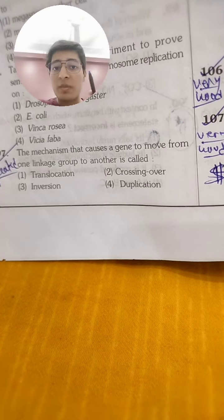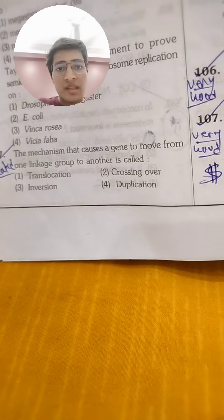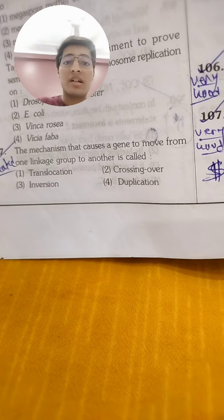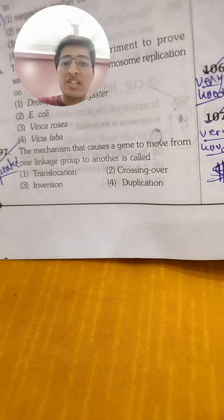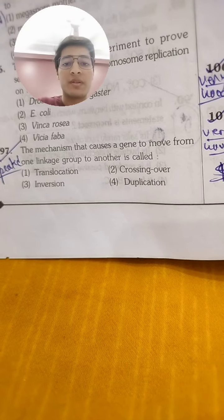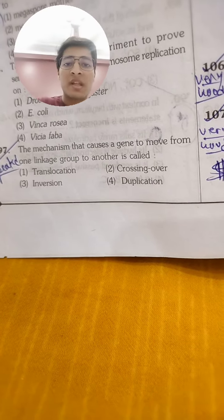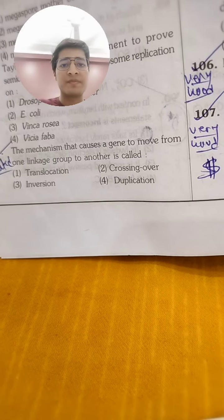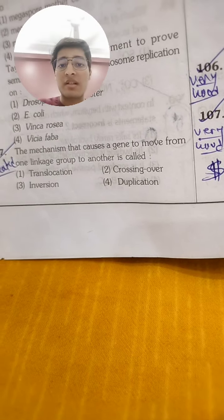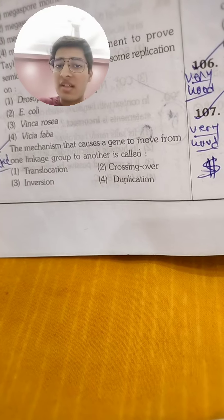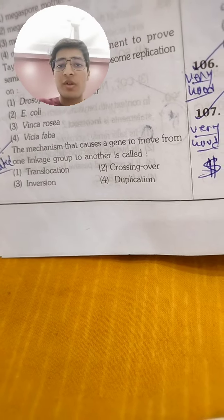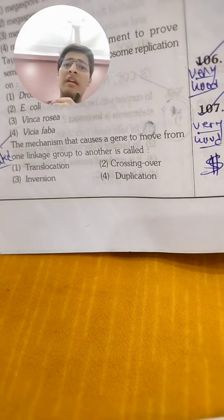So the term 'linkage group' is now clear. The mechanism that causes a gene to move from one linkage group to another — what is it called? Looking at the two key options: translocation and crossing over. Both involve transfer of genes, but these two things are different.